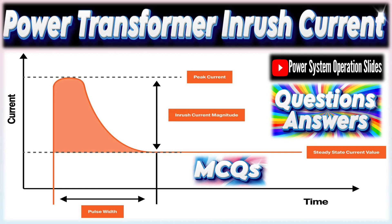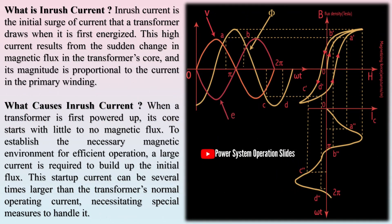Inrush current is the initial surge of current that a transformer draws when it is first energized. This high current results from the sudden change in magnetic flux in the transformer's core, and its magnitude is proportional to the current in the primary winding.